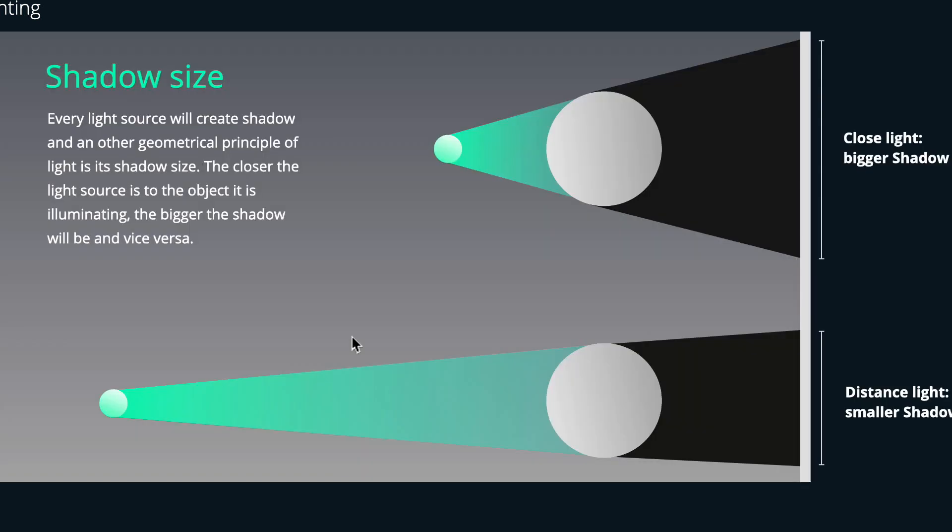Now let's have a look into shadows and there are like two things we have to keep in mind when we want to understand shadows. The first thing is shadow size. There's a simple rule: if the light source is closer to your object the shadow will be bigger. As you can see, when the light source is closer the angle will be wider and thus the shadow size will be bigger. If you move the light source further away from our object the angle will change and the shadow will be smaller.